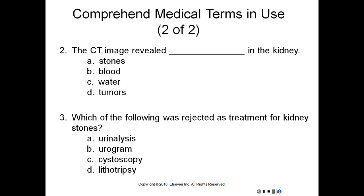And then three: which of the following was rejected as treatment for kidney stones? The urologist did not advise lithotripsy for the renal calculi or the renal stone. So D for lithotripsy was rejected. That will end this recording. You can now go to eCampus and complete the assignments.